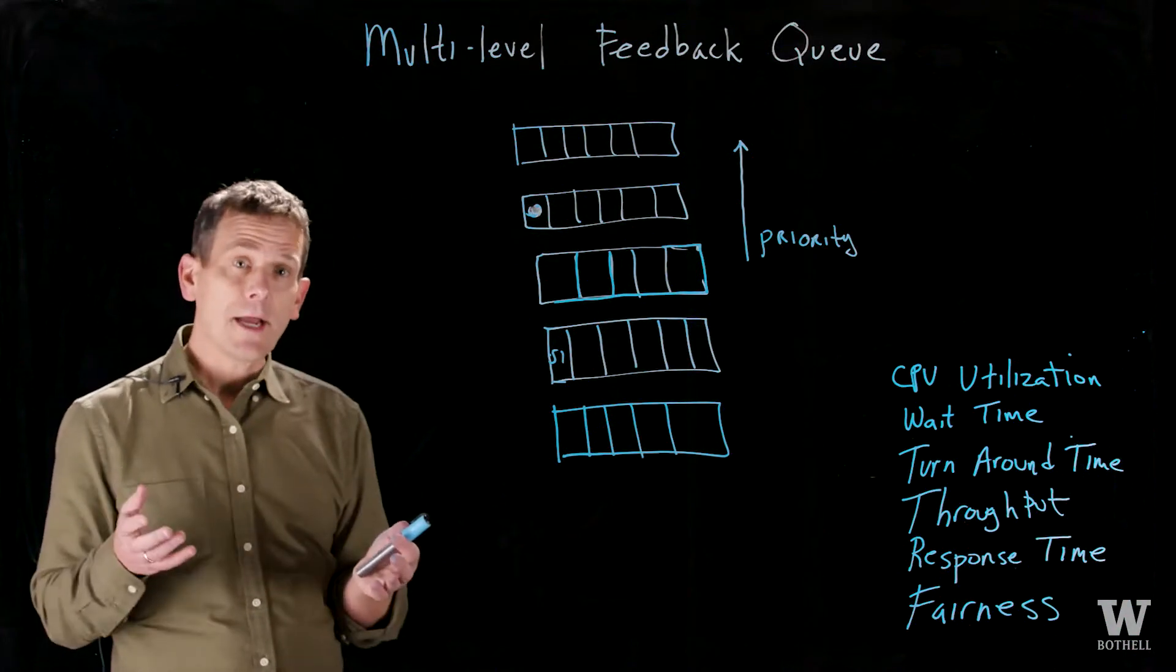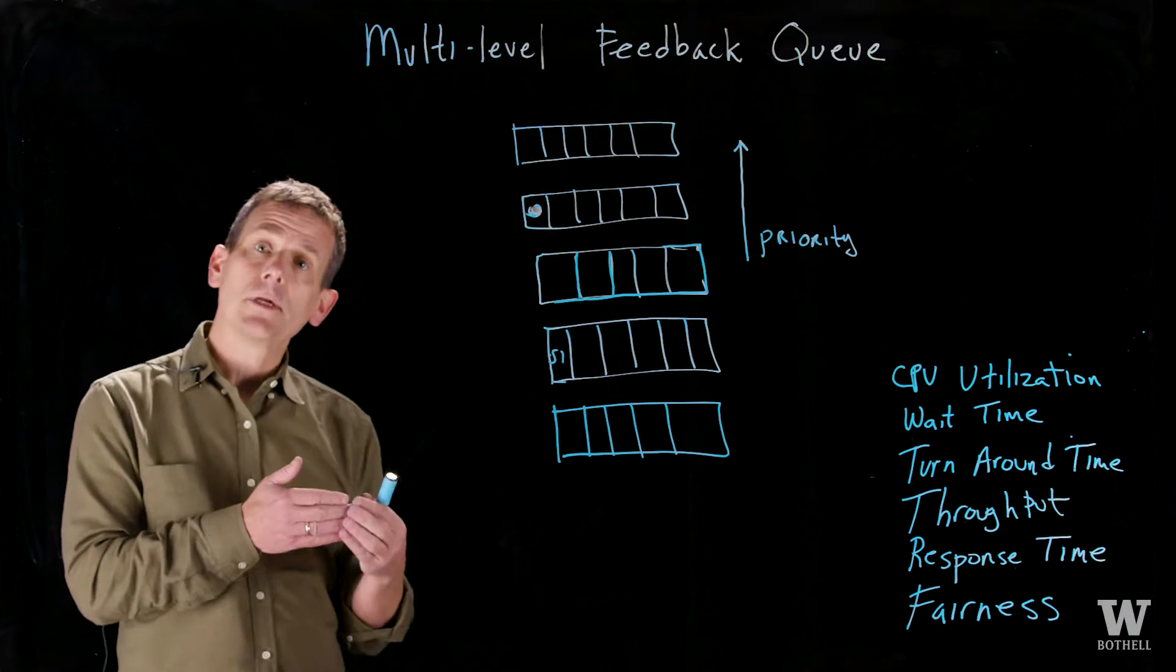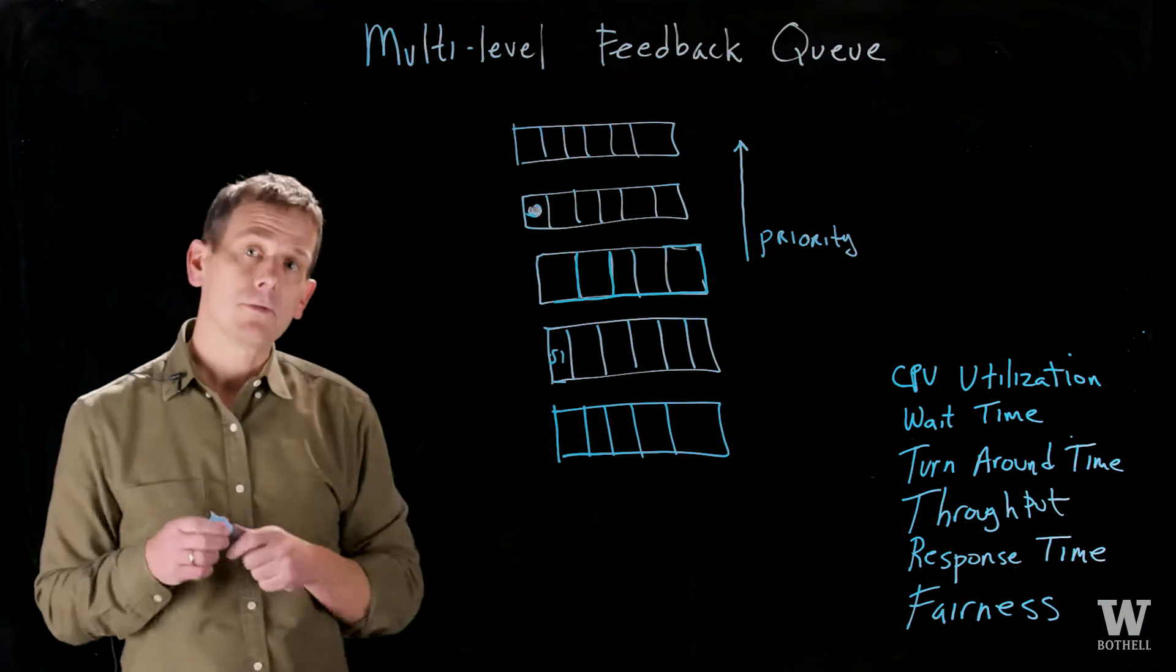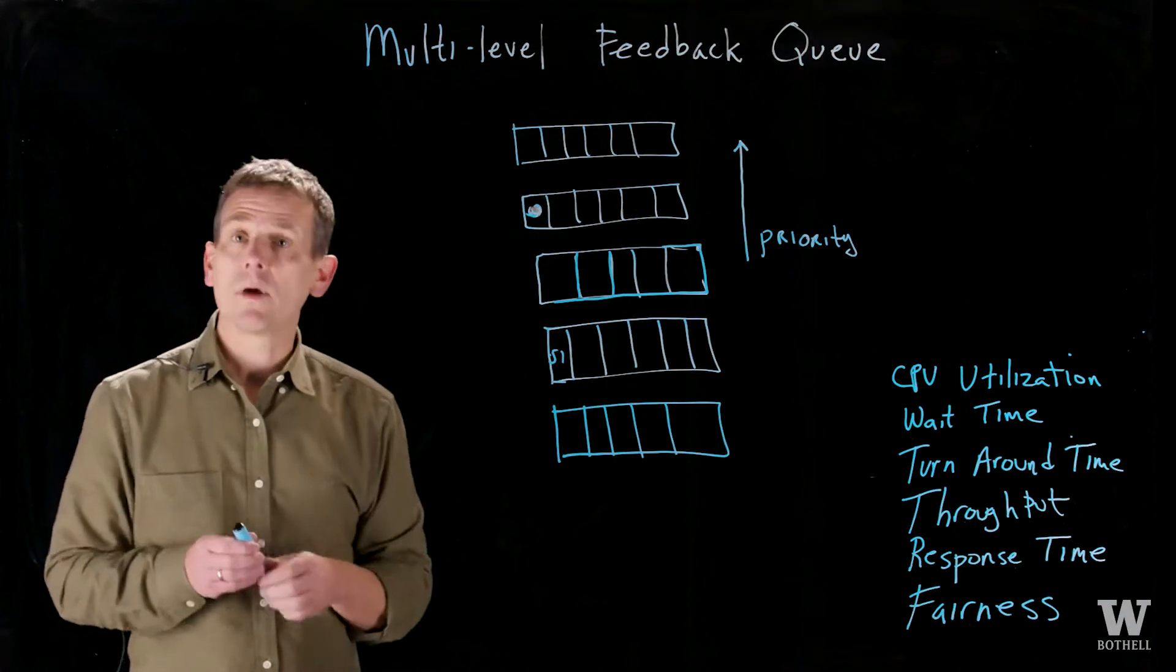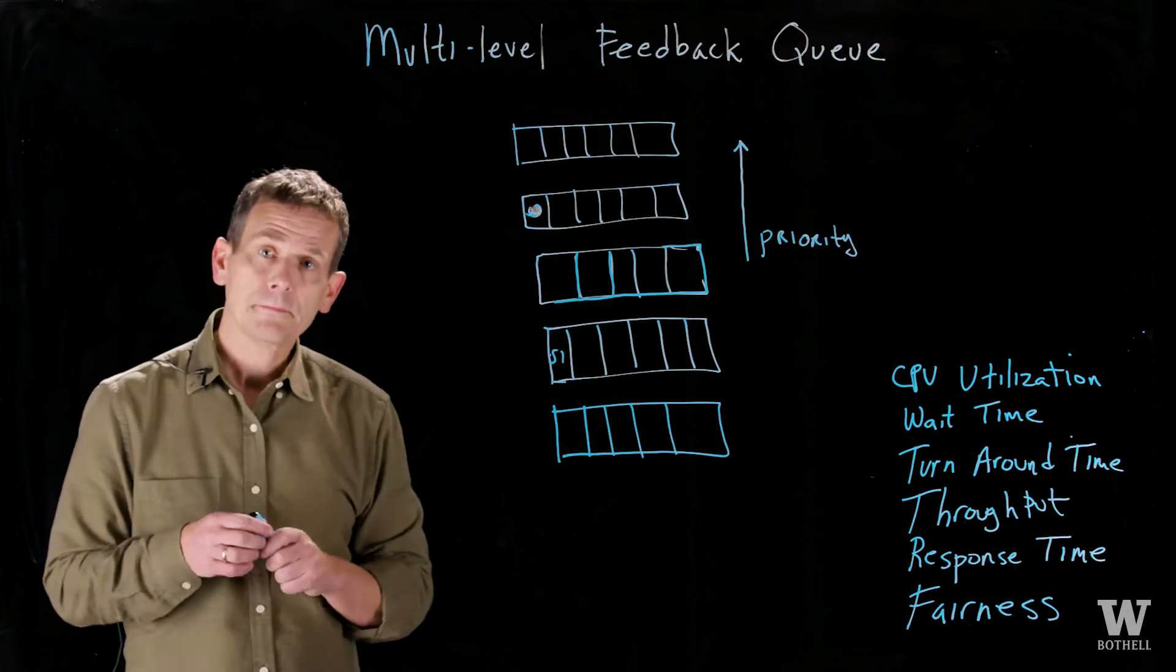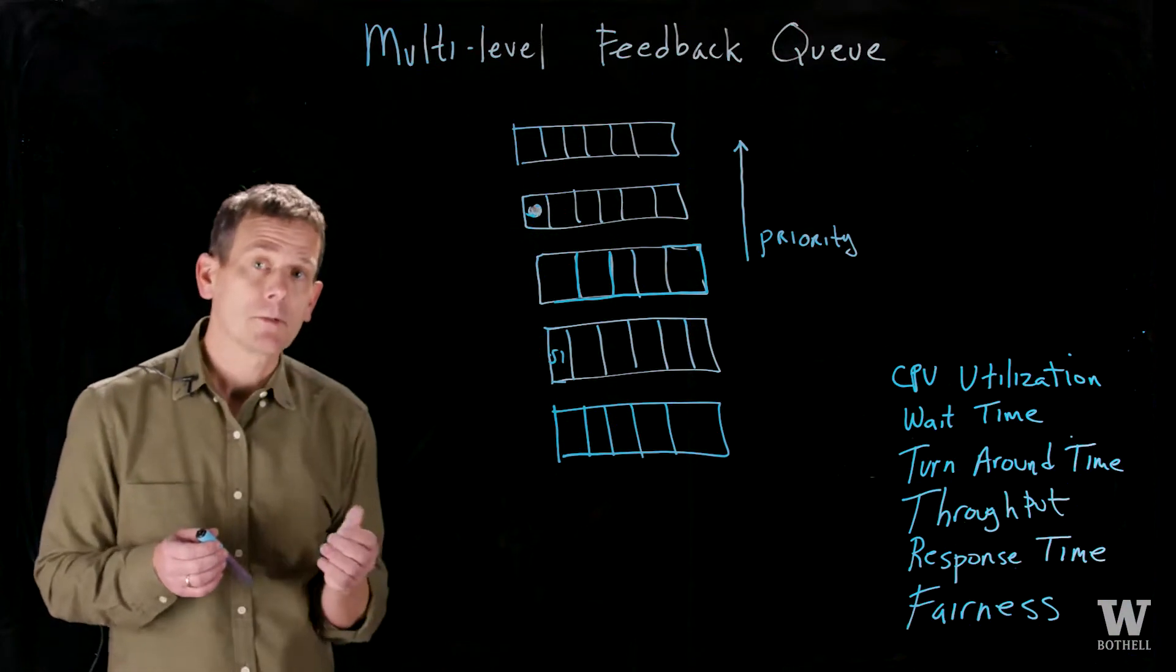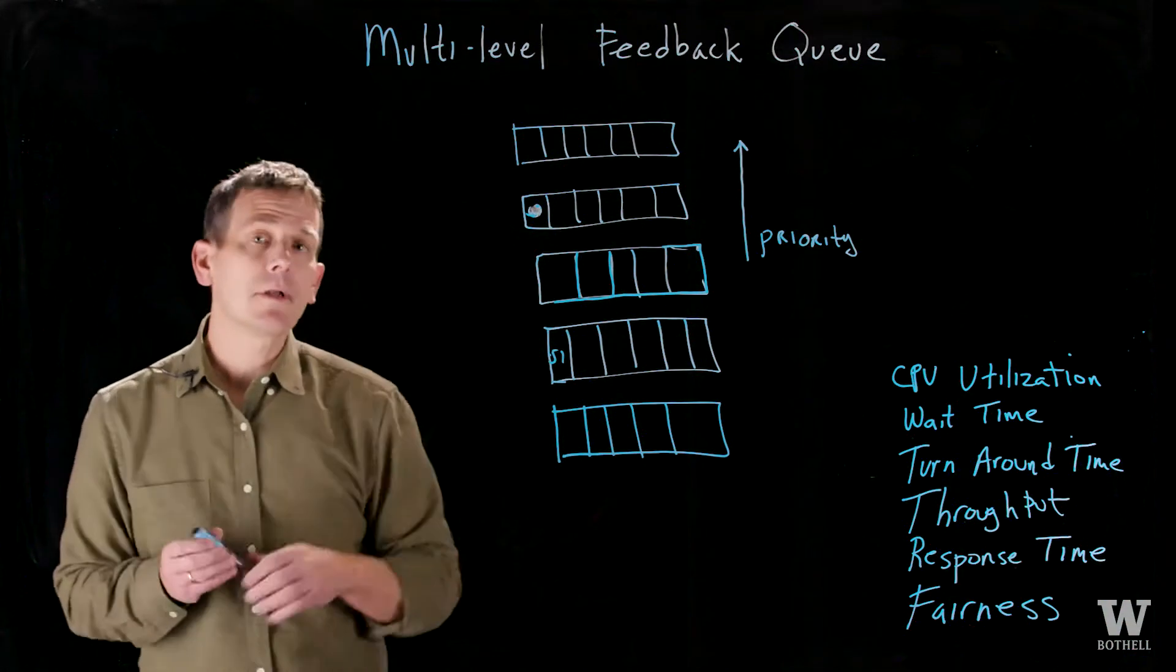If a job is interactive, or maybe in the front of your screen as in Windows, it could go into an interactive queue so it gets the CPU when it wants the CPU. If it's a background job and doesn't require a lot of attention, it may go in a very lower priority queue.